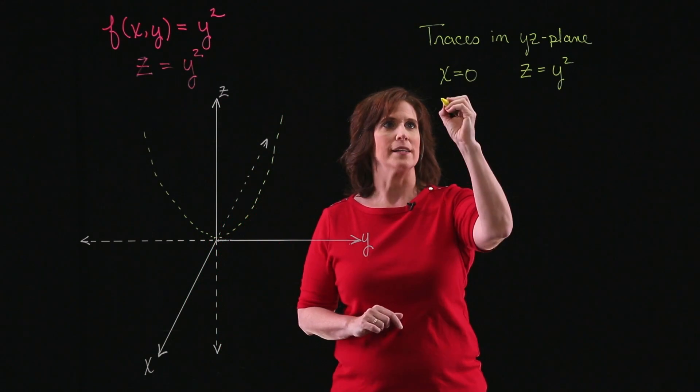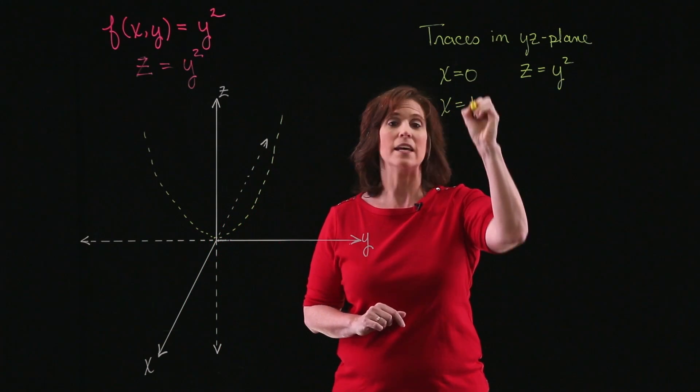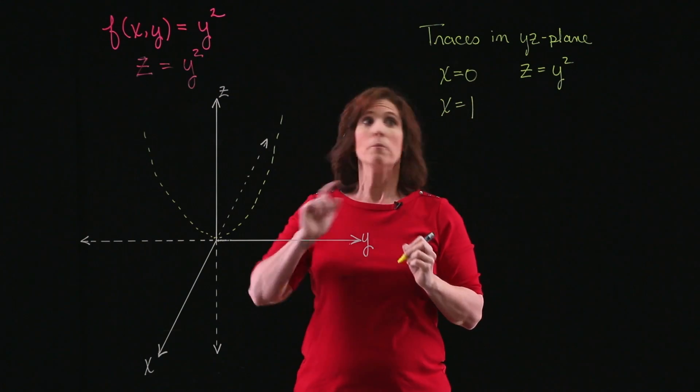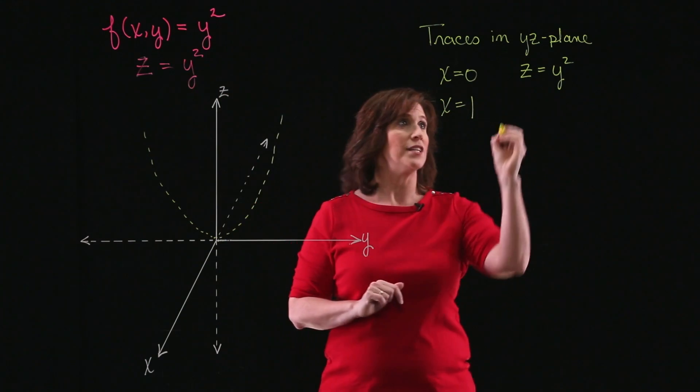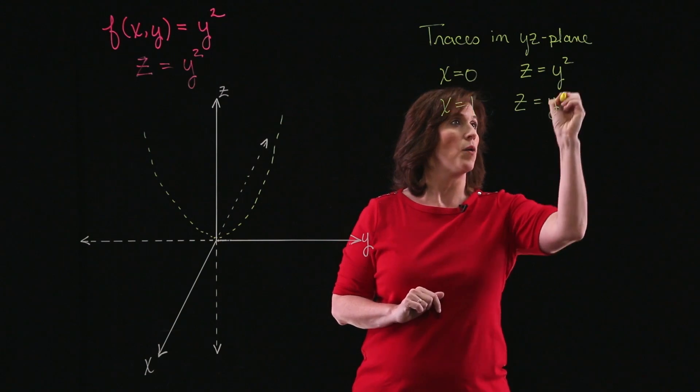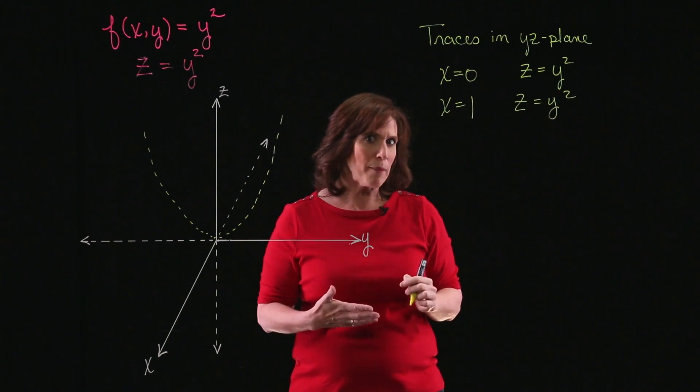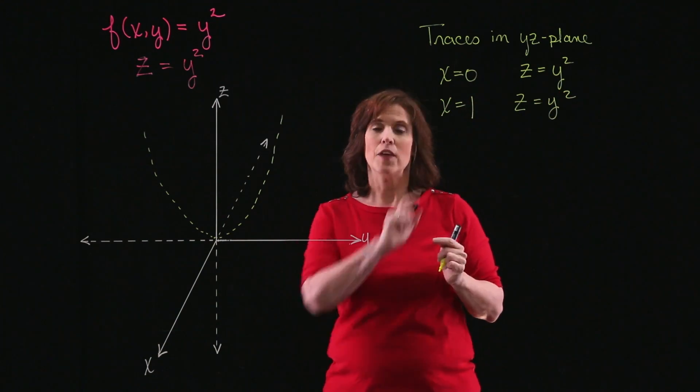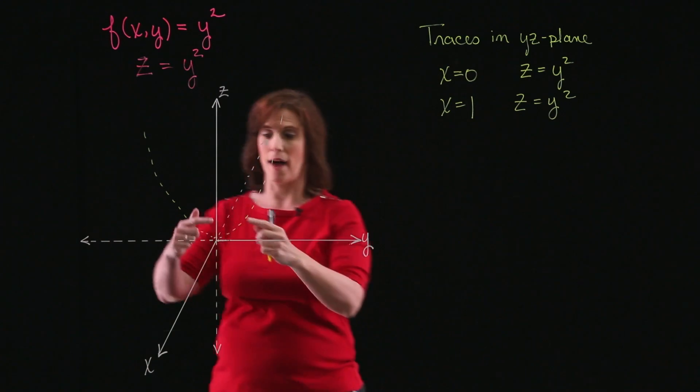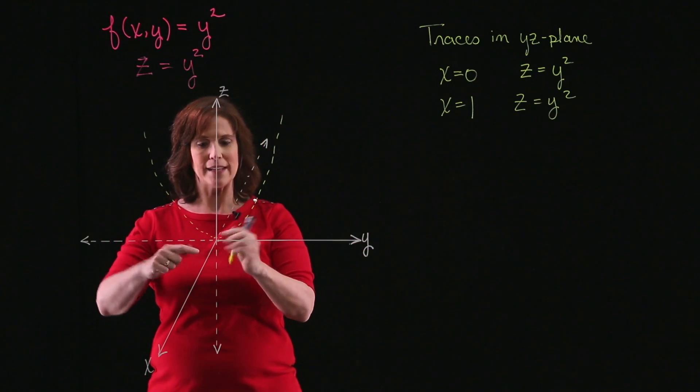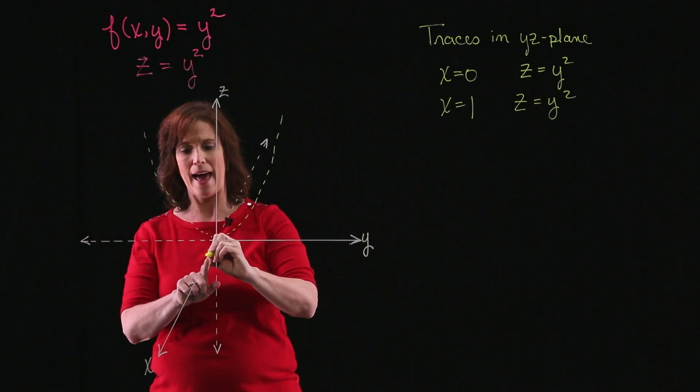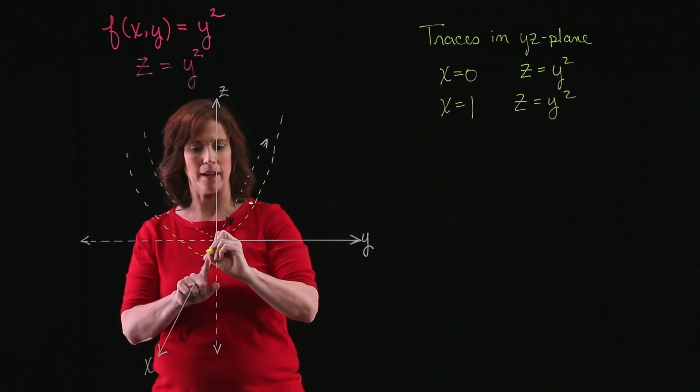OK, let's take a look at another trace. Let's see what happens if x equals 1. Plugging x equals 1 into my equation, I have z equals y squared, which is a parabola again, the same parabola. The only difference is this time x is 1. So I've moved out along the x-axis 1 unit, and I still have the same parabola.